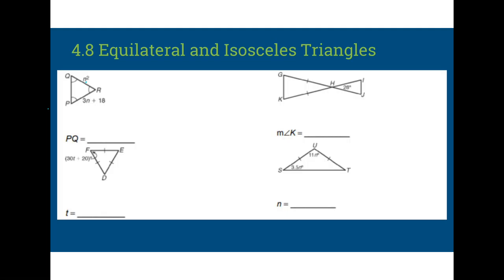So since it's an equilateral triangle, or since it's equiangular, we know it's also going to be equilateral. So I can say that n squared is equal to 3n plus 18. In order to solve a quadratic, we have to get it to equal 0. So I'm going to move everything over. I'm going to subtract 3n from both sides and subtract 18 to get n squared minus 3n minus 18 is equal to 0.